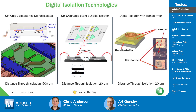The three main digital isolation technologies are: the off-chip capacitance digital isolator, with a distance-through-insulation of 500 micrometers; the on-chip capacitance digital isolator; and the digital isolator with a transformer. Of course, they all have pros and cons.